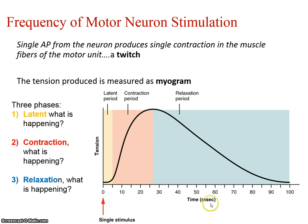The contraction phase begins when actin and myosin can bind to each other, and it will continue as long as we have calcium and ATP and don't run out of sarcomere. The tension will build to a point and then be maintained.